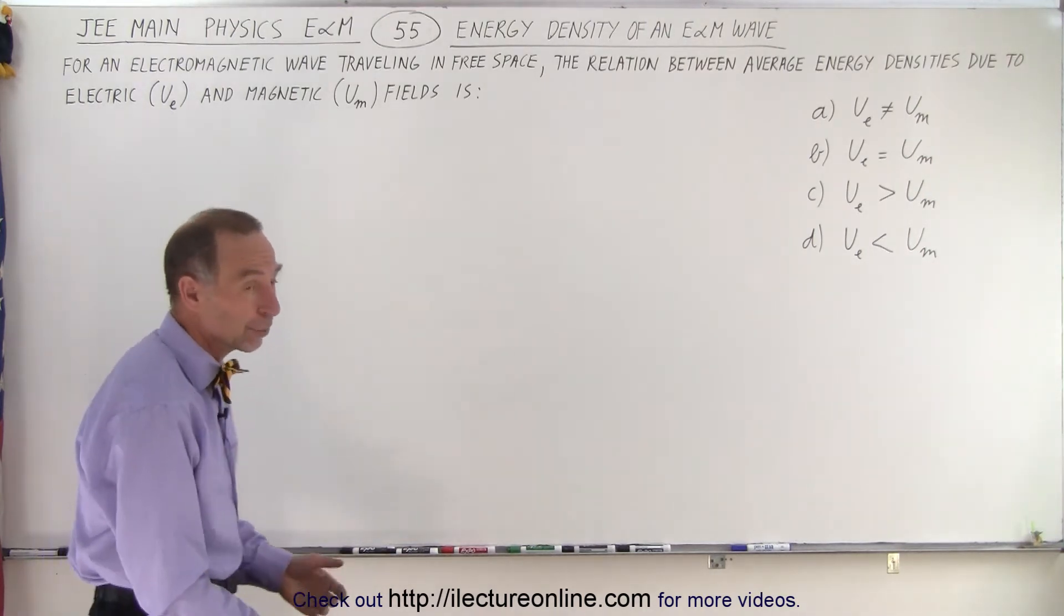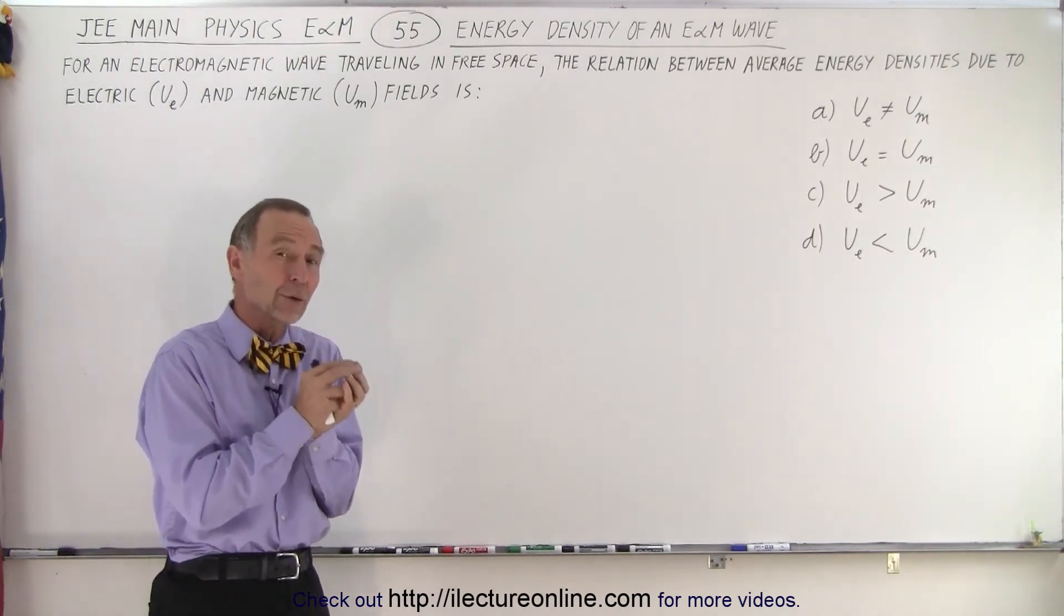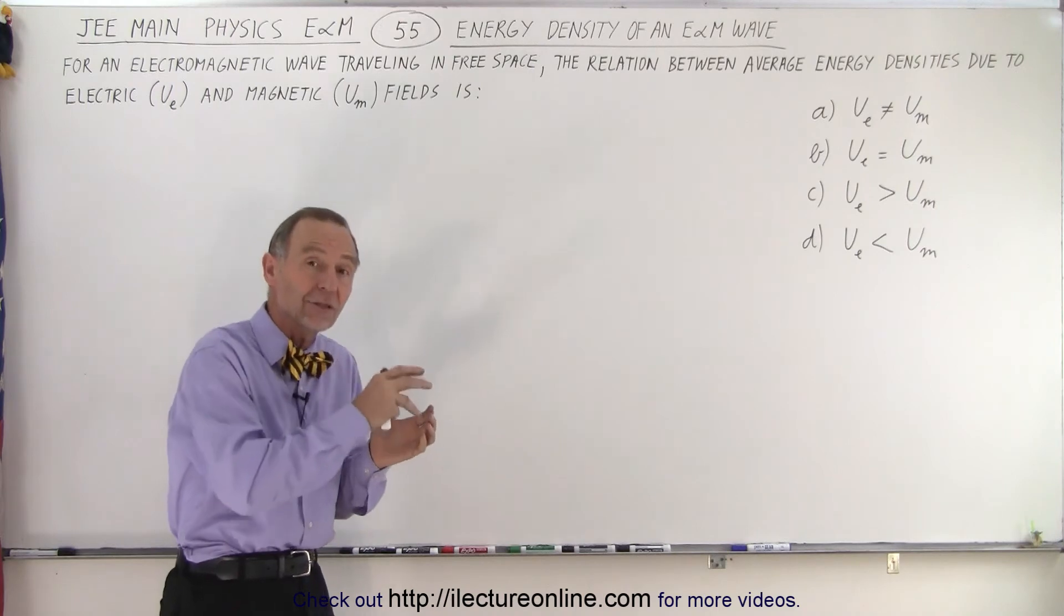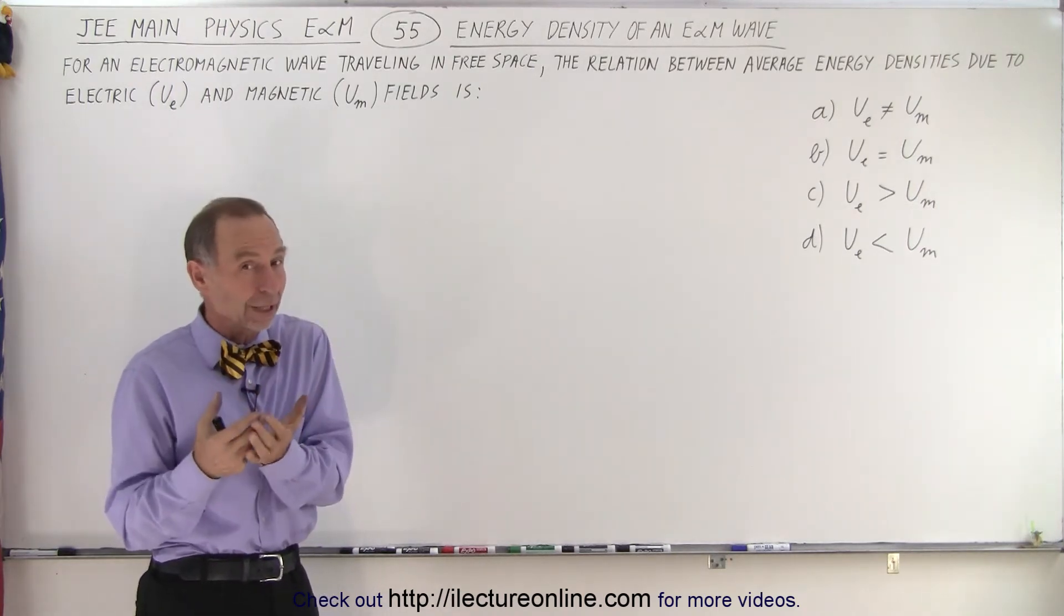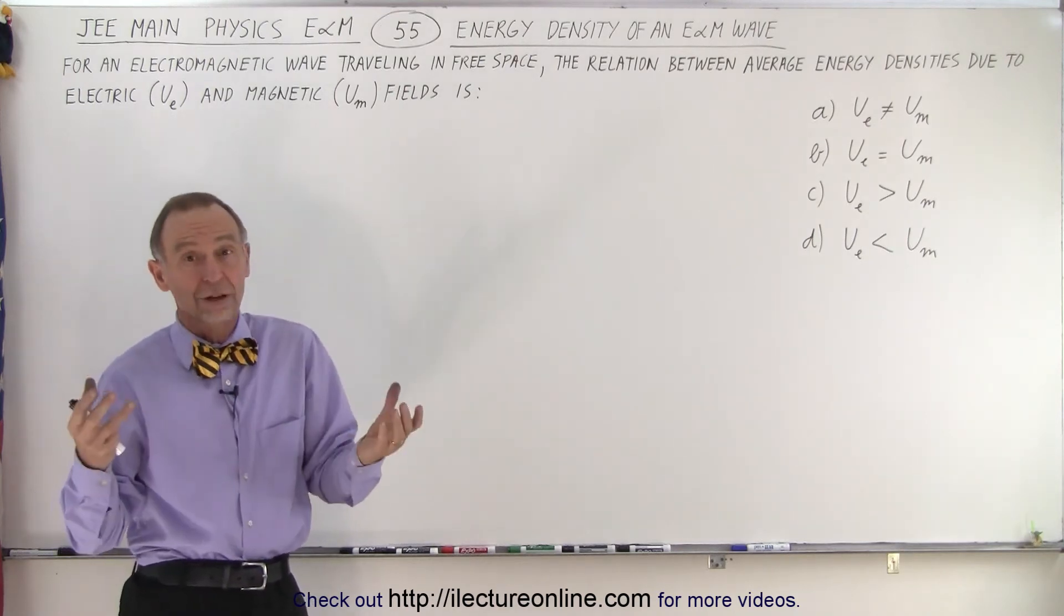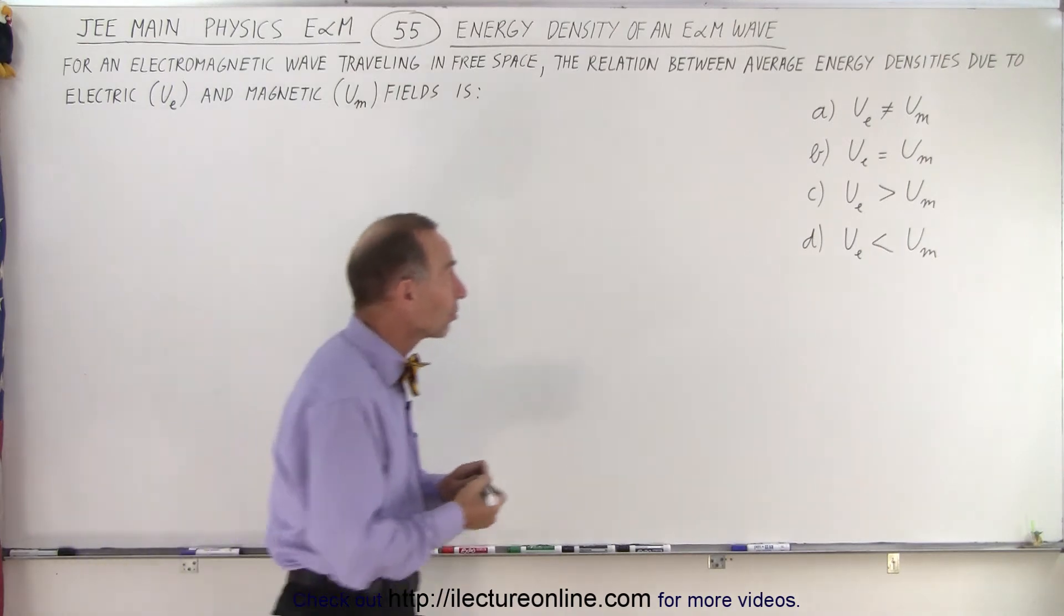And there's four possible answers, but right away we should realize that the energy contained in an electromagnetic wave due to the electric field oscillations is exactly the same as the energy contained in the electromagnetic field due to magnetic field oscillations. So therefore the densities must be equal, and that is answer B.